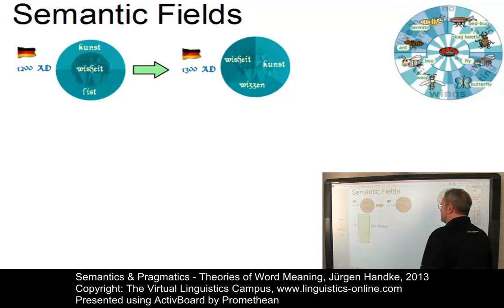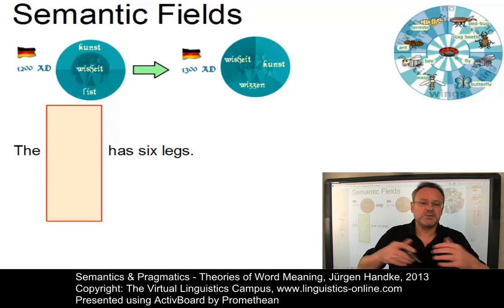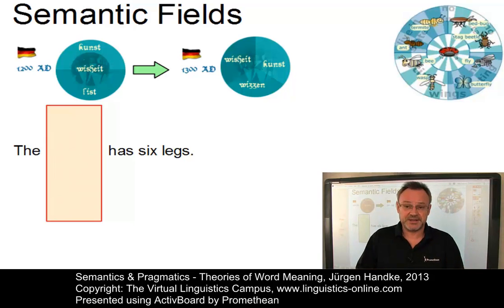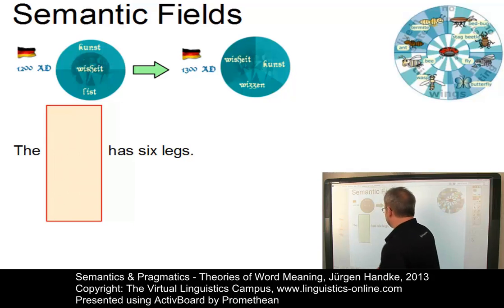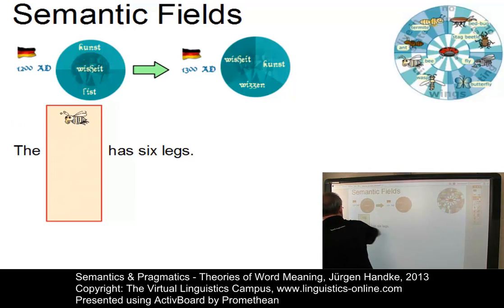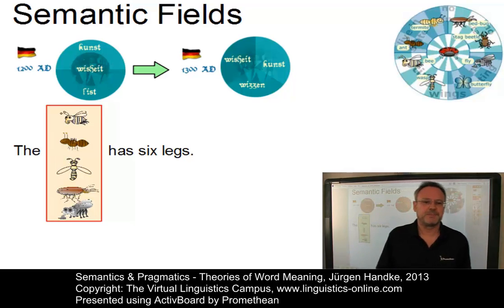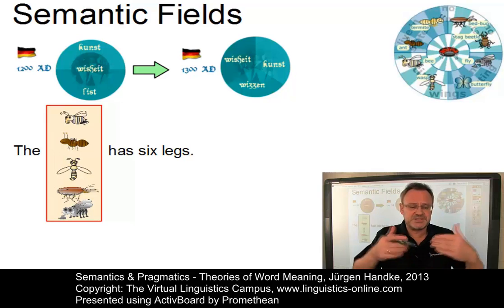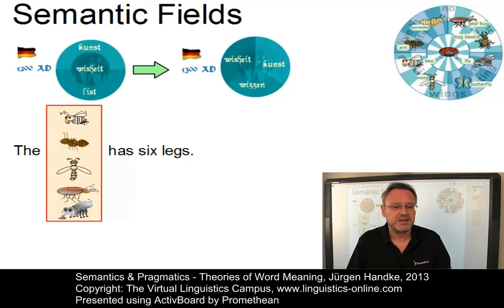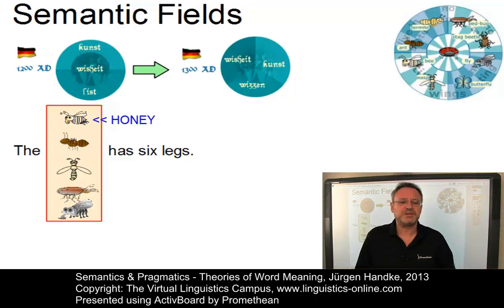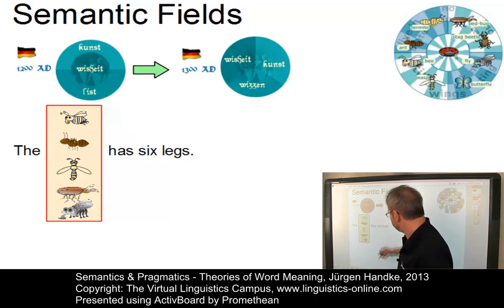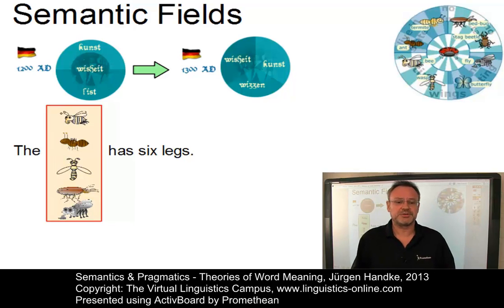Essentially, semantic fields are based on paradigmatic relations where linguistic units are contrasted or related in a particular environment. For example, bees, ants, the wasp, the bed bug, and the fly all have six legs. However, it has been argued that syntagmatic relations — particular horizontal associations like the item 'honey' associated with 'bee', or 'can fly' associated with some of these items — have to be incorporated as well.